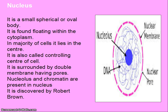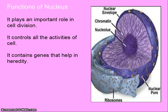Nucleus. It is a small spherical or oval body found floating within the cytoplasm. In the majority of cells it lies in the center. It is also called the controlling center of the cell. It is surrounded by a double membrane having pores. Nucleolus and chromatin are present in the nucleus. It was discovered by Robert Brown. Functions of the nucleus: it plays an important role in cell division, it controls all the activities of the cell, and it contains genes that help in heredity.